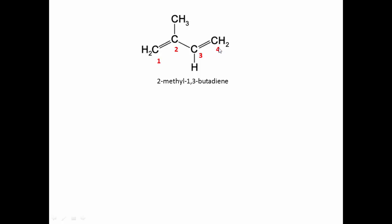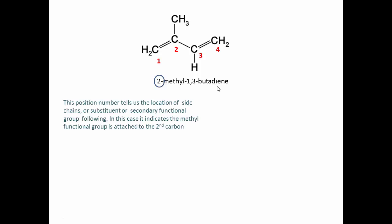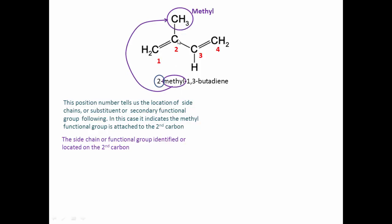So let's explain the name 2-methyl-1,3-butadiene. The number two is the positional number — it tells us the location of the side chain attached to the parent chain. You could have more than one positional number. They tell us the location of the substituent compounds or secondary functional groups. In this case we have a methyl group, so the name following the positional number is 'methyl' — there is a methyl attached to the second carbon.